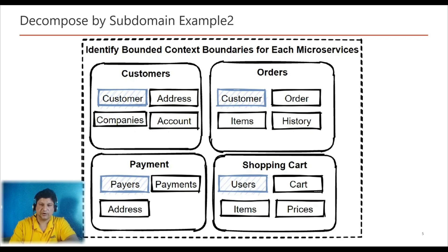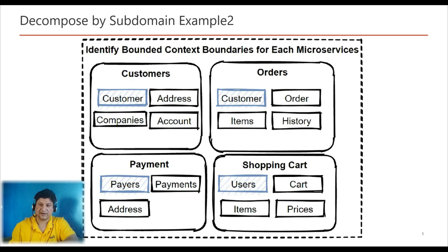Now let's understand the example showing bounded contexts and subdomains. When designing a large application, it's crucial to discuss with domain experts to define domains and subdomains and to evaluate the bounded context. Domain experts will help you identify the subdomains and bounded contexts for your microservices. For example, in this diagram there are several bounded contexts like customers, order, payment, and so on, with subdomains inside each bounded context representing the same data but named differently according to each domain expert's area.